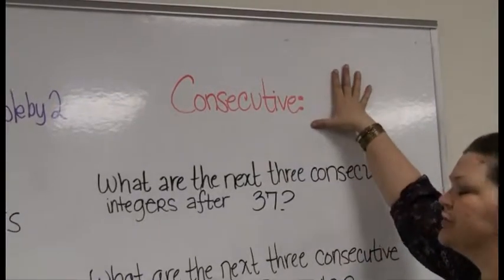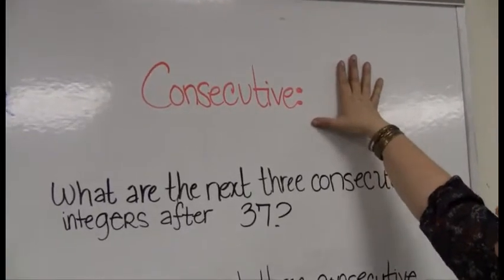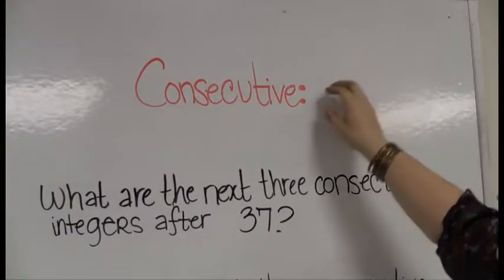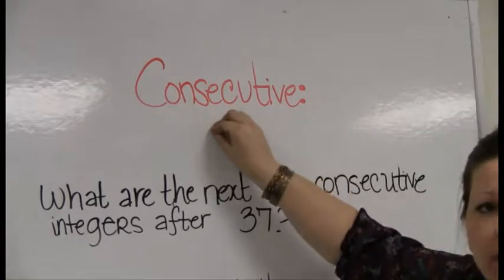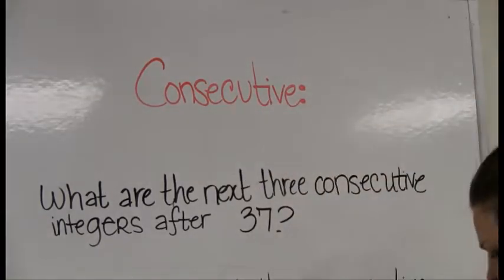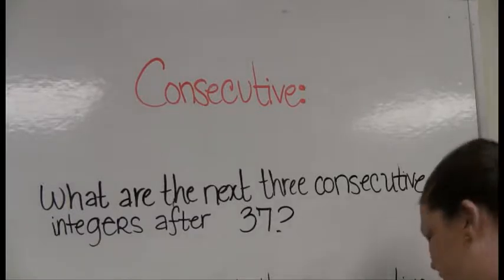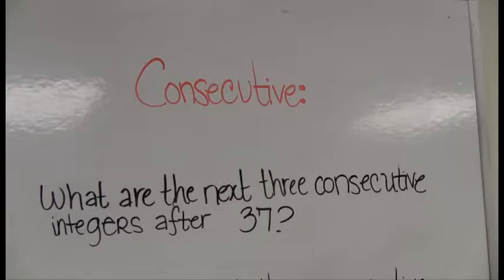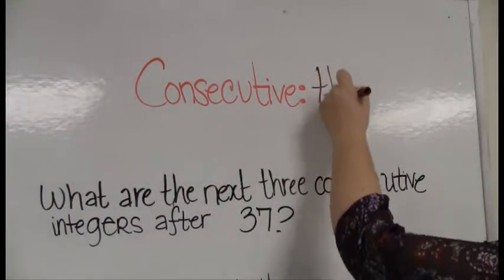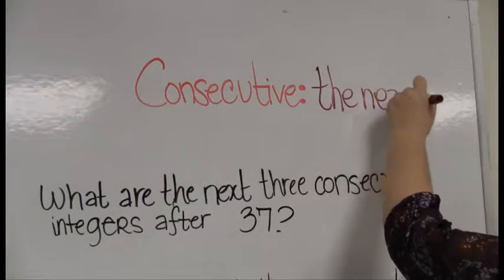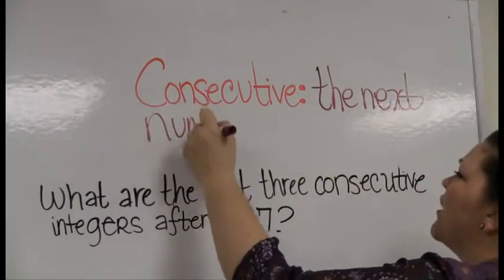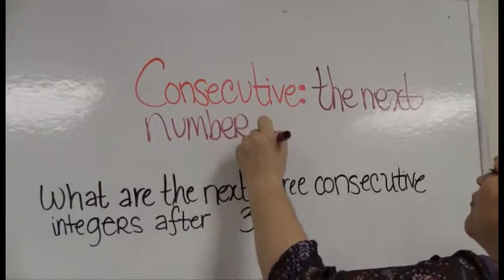One more term that you're going to see in section 1.4 is the word consecutive. Big long word, a lot of people don't know what it means, but again, it's really easy, that's the good news. So what does it mean to be consecutive? Well, consecutive in math means the same thing that consecutive in the world means. Okay, consecutive just means the very next thing, the next number, one after the other in order, guys.